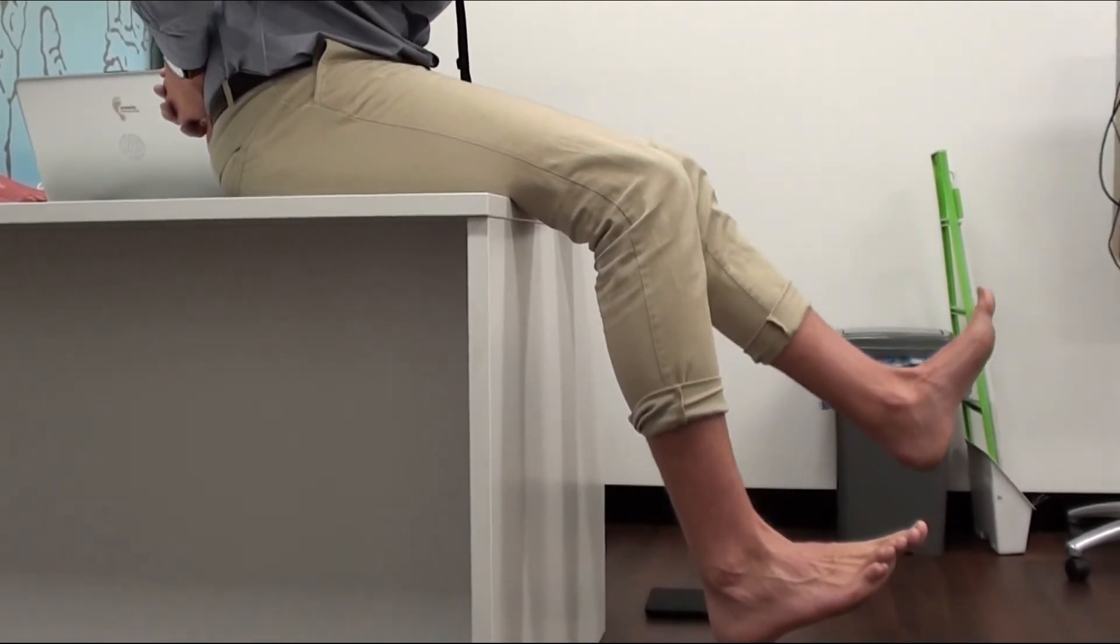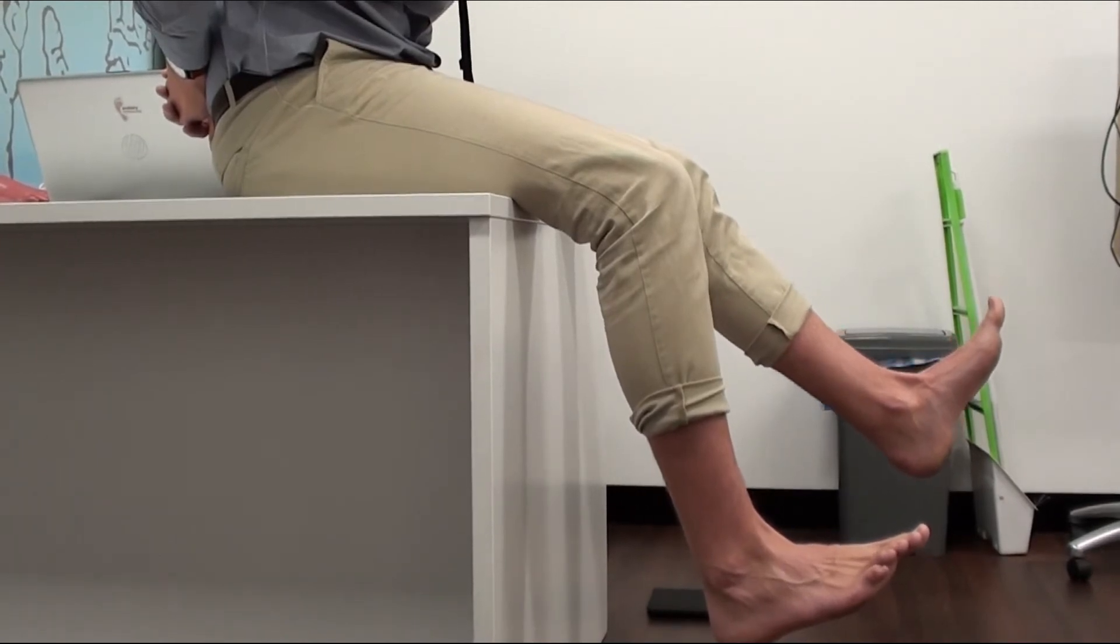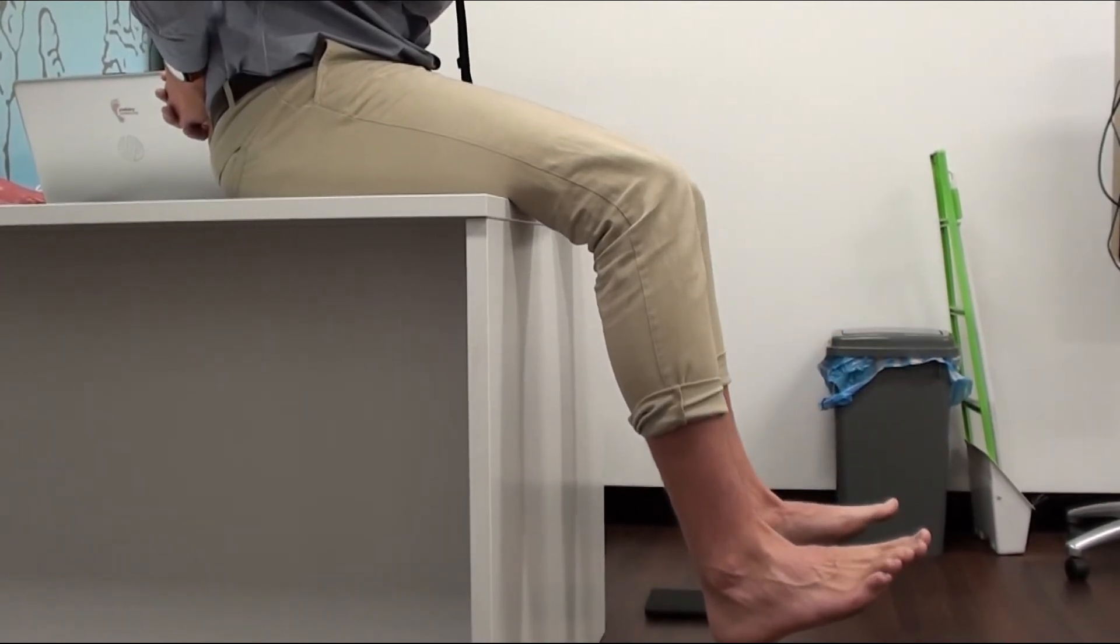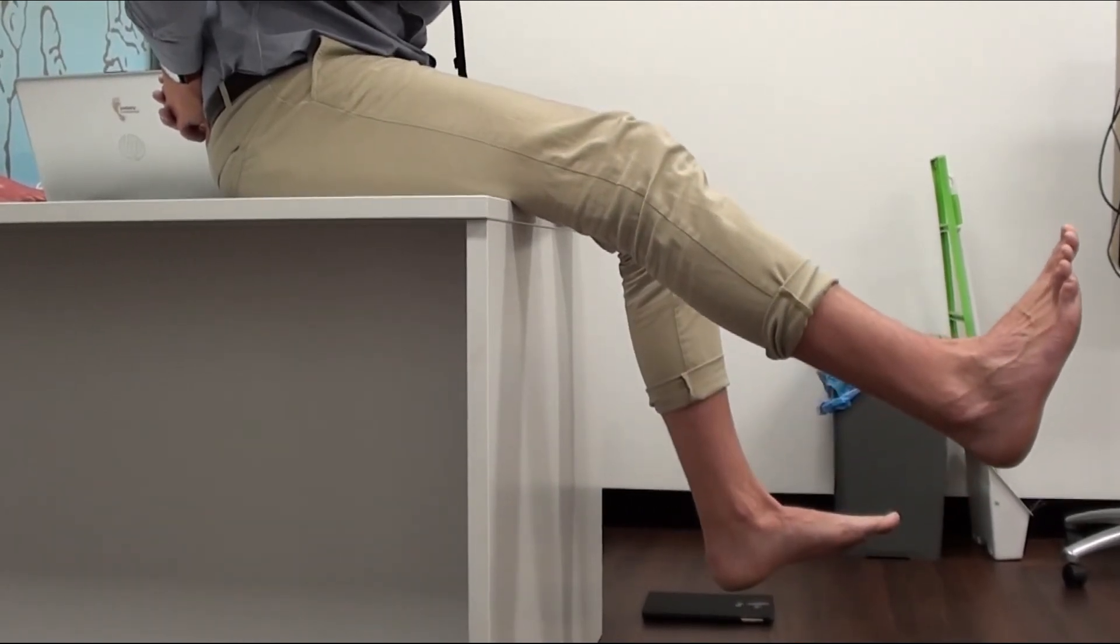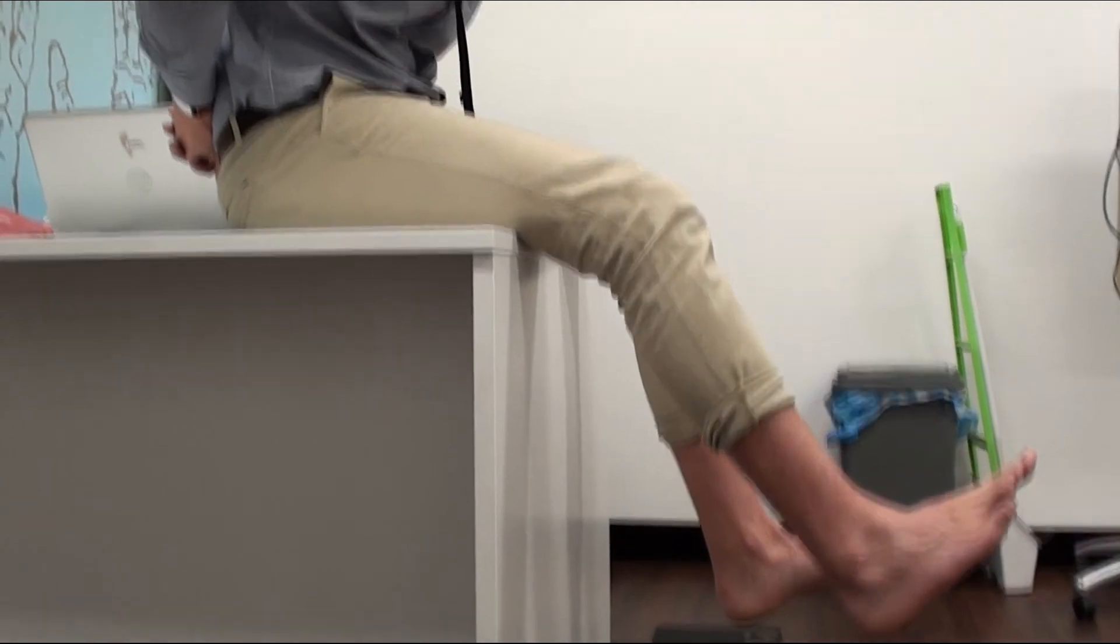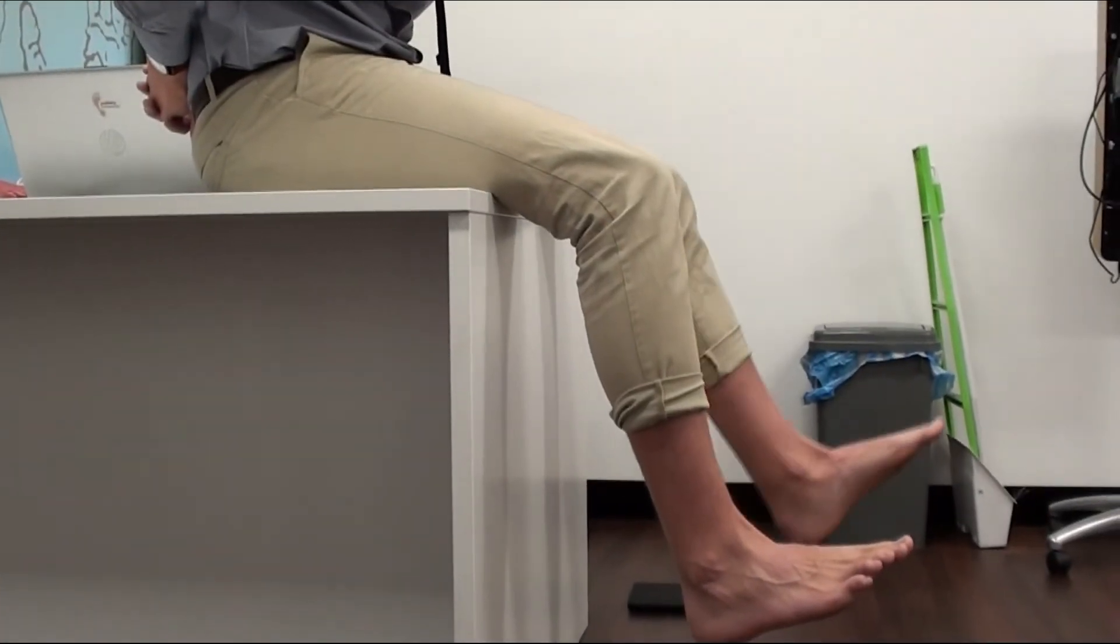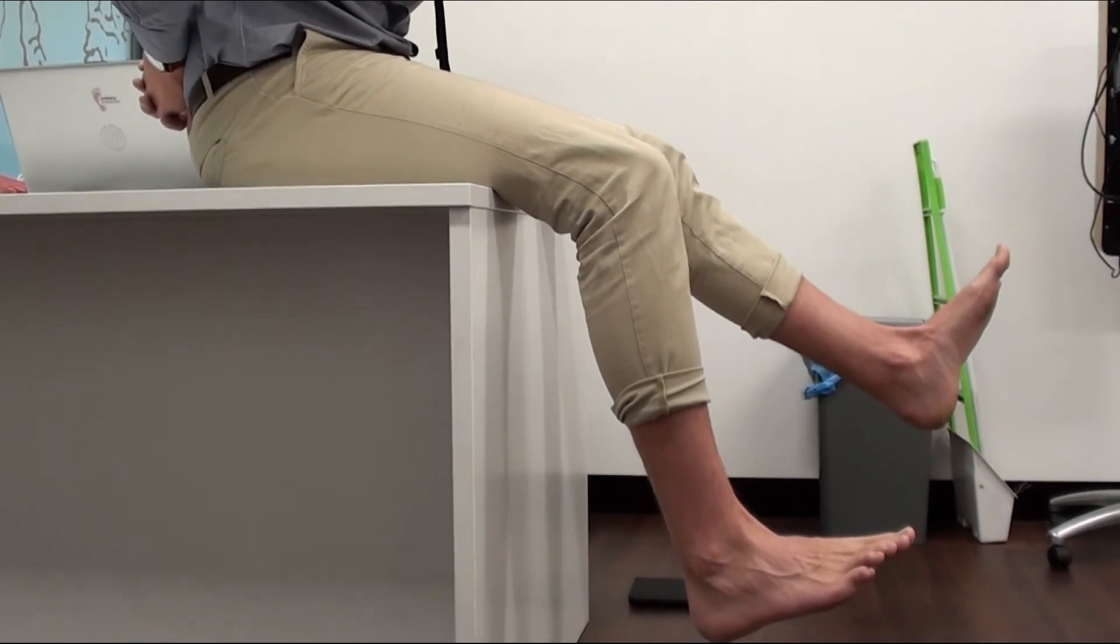So you can either do 20 on one side, or you can alternate and do left, right, or left and right. But this is meant to feel sharp, it's meant to feel tight, and you maintain that slump position until we repeat our 20 each leg by 3 sets.